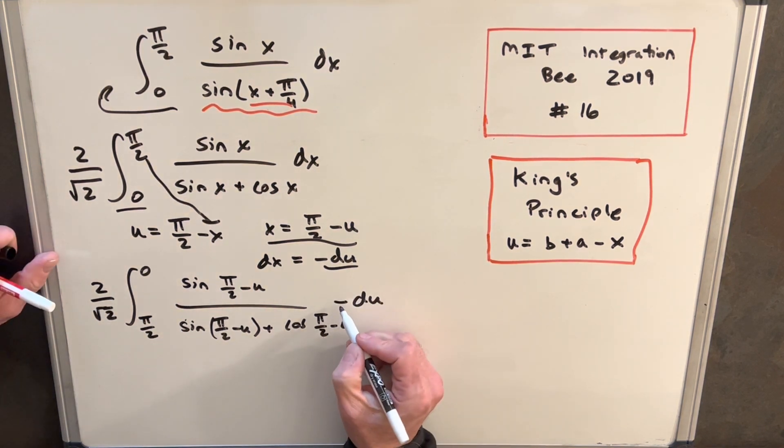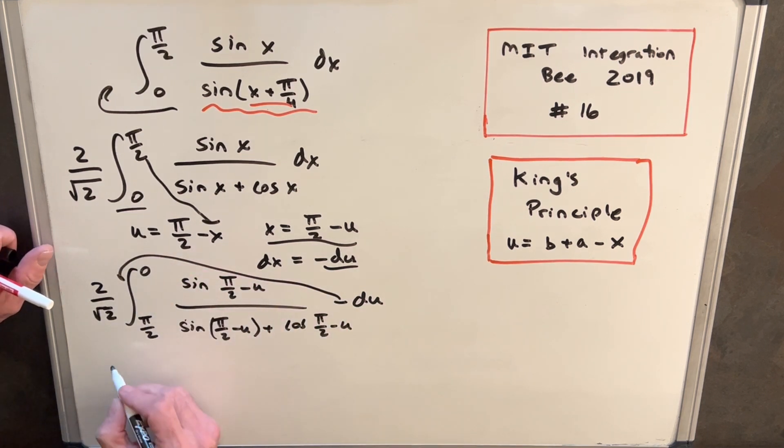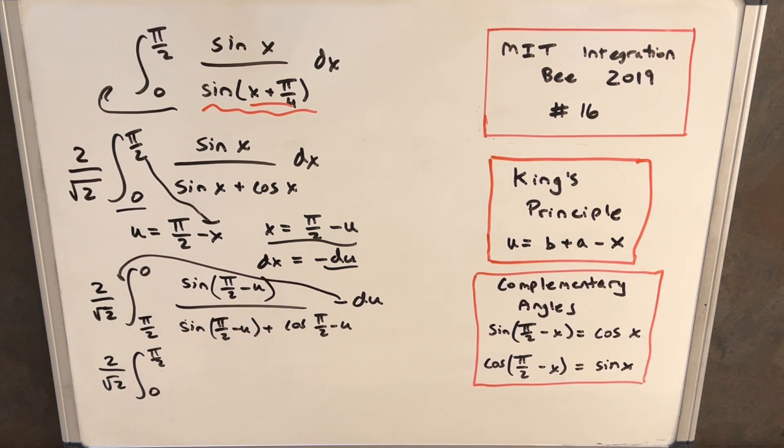And then we'll just use this minus sign to flip the boundaries of integration, so we'll rewrite this to square root of 2 pi over 2 to 0. When we write this, we can use the complementary angle formula for sine and cosine.